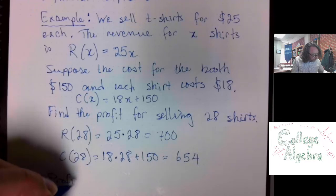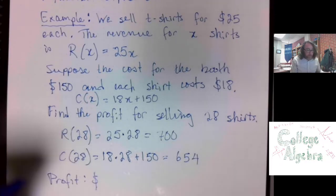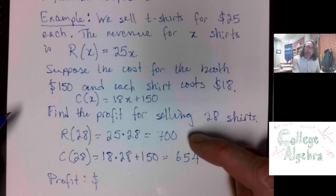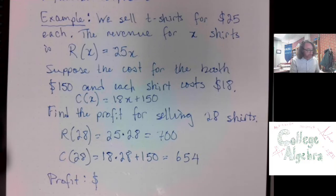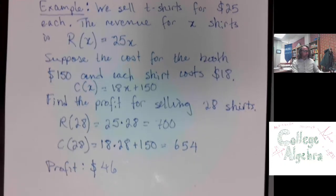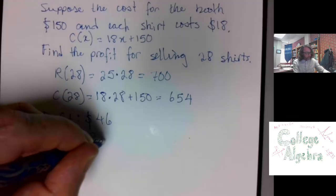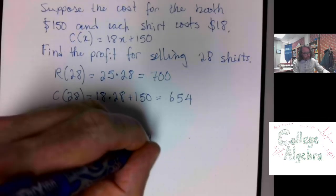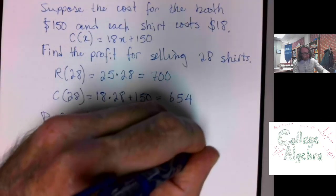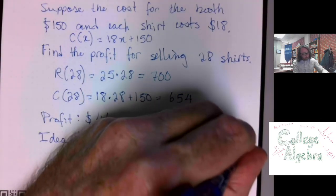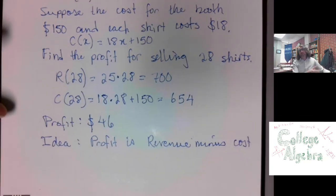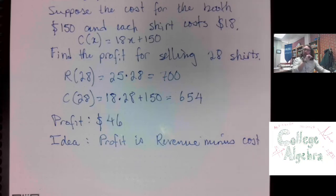So, the profit can be found by taking this amount of revenue that we had coming in and subtracting the amount that we had to spend to make that happen. I get $46 if we do 700 minus 654. So the basic idea here is that your profit is revenue minus cost. And we have a revenue function and we have a cost function. And we do the subtraction to get profit.